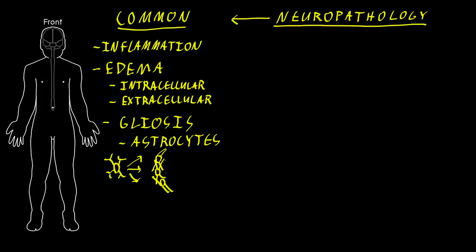We call that the glial scar. Areas of injury in the central nervous system can develop these areas of gliosis, which are a type of scar tissue. It's got some similarities and some differences to scar tissue that happens in other tissues of the body.